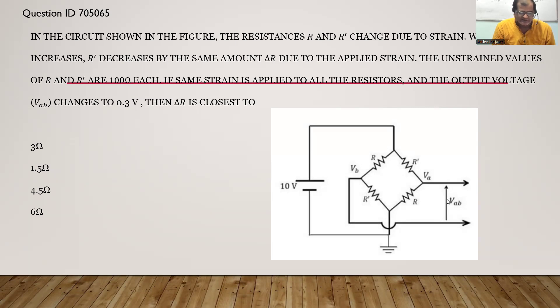Voltage across terminal A and B when the strain is applied. When we apply the strain, the resistance of R increases by delta R and the resistance of R' decreases by same amount minus delta R. In that condition the Vab is given and we have to find the value of delta R.